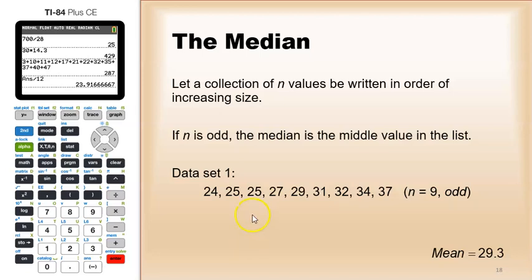For this example you see on the screen, data set one, there are nine values, so the middle is going to be right around the fifth, right here. This is the point where you see there are four numbers below it and four numbers above it. Compared to the mean, which is 29.3, you can see the median and mean are pretty close together here. That's not always going to be true.